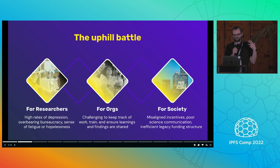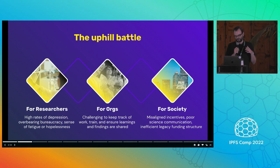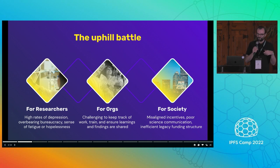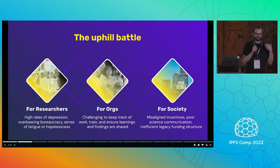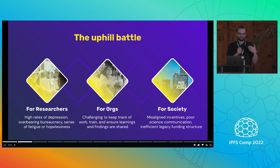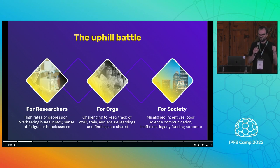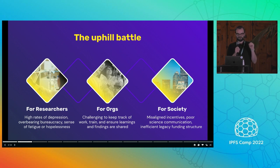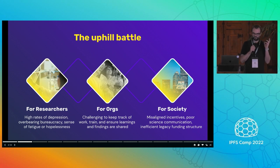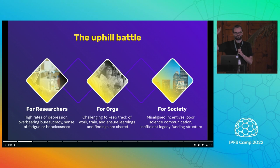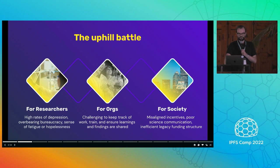I'll first start with a bit of why we're here at all. This DSci is helping us get new momentum to really solve a longstanding problem, because the world today for researchers is quite a harsh one. In academia, post-graduates have a high rate of depression, much higher than the norm. Within organizations, you have the traditional challenges of keeping track of work, training people, and ensuring learnings and findings are shared. And fundamentally for society, it feels like there's a disconnect between societal needs and what researchers could do if we had a better loop between society and those researchers. That's why we are very passionate about creating these new coordination mechanisms.